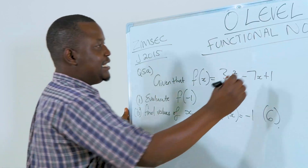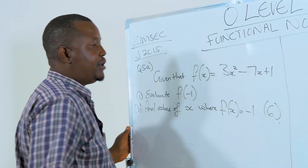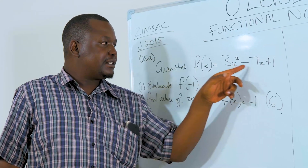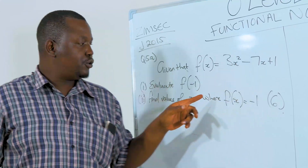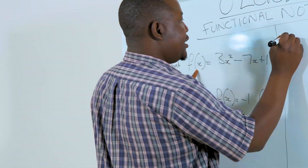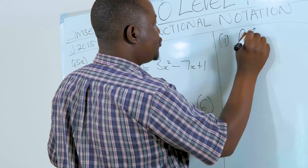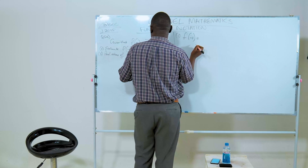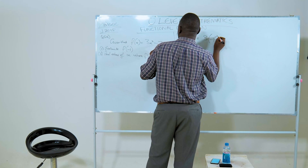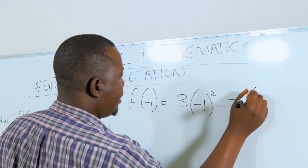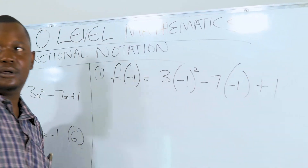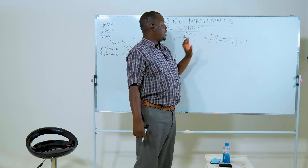When they are saying f(-1), what they are talking about is that for x we are going to substitute with negative 1, meaning to say f(-1) is going to be equal to 3 multiplied by negative 1 squared minus 7 multiplied by negative 1 plus 1.